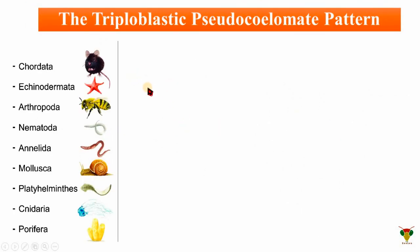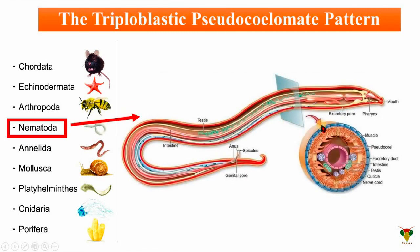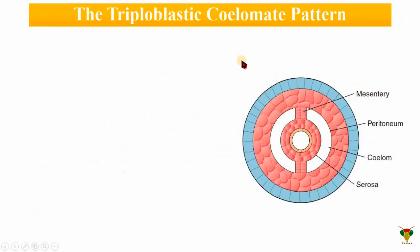The only phylum that follows the pseudocoelomate pattern of organization is Nematoda. In the diagram, ectoderm is present, then mesoderm, then endoderm, and the hollow space between them is the pseudocoelom. The organs are present here, loosely attached to the surface of the endoderm and mesoderm.